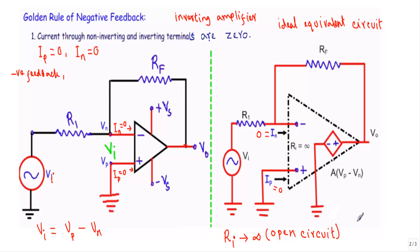The second rule states that when the op-amp is in negative feedback, the inverting and non-inverting terminal voltages are equal: Vp = Vn. The differential input voltage Vi = Vp minus Vn. When Vp equals Vn in negative feedback, ideally Vi = 0 volts. In practice, the differential input voltage will be in the range of microvolts.